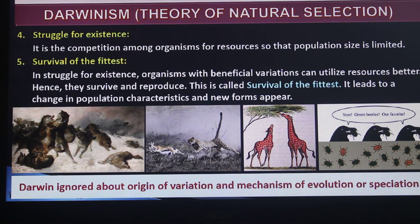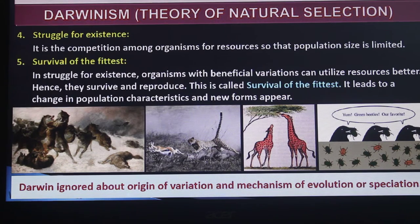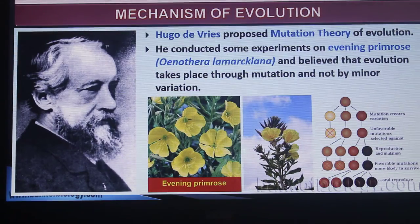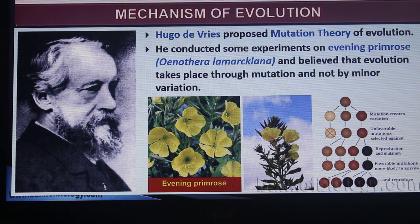Survival of the fittest leads to changes in the population characteristics and new forms of species. This is the natural selection phenomenon. It is the mechanism of evolution, and Darwin raises the question: